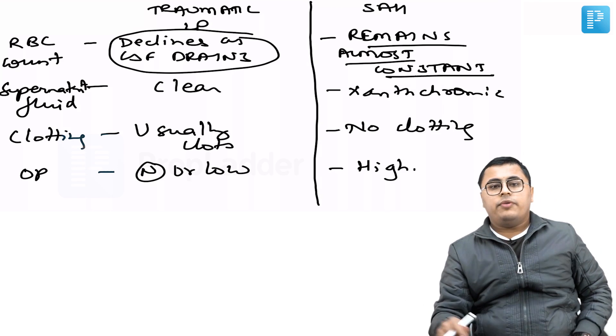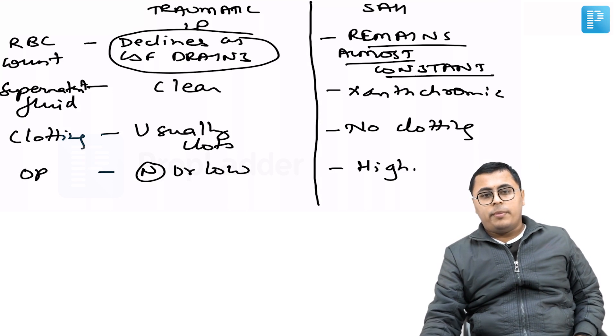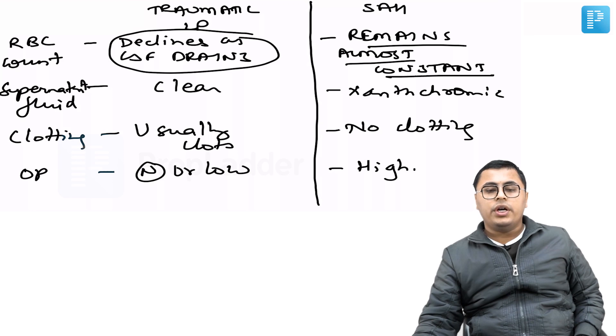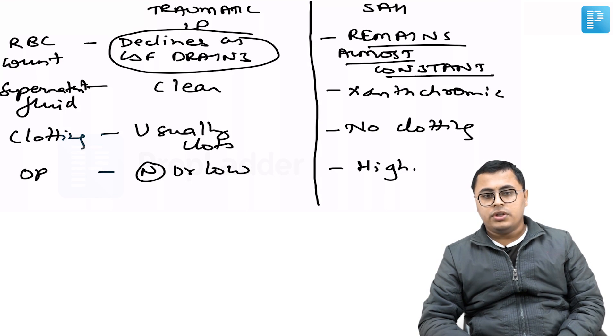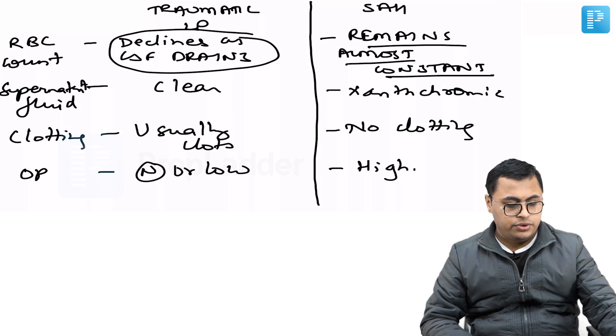These are the differentiating features between traumatic lumbar puncture and CSF in subarachnoid hemorrhage: RBC count, supernatant fluid, clotting, and opening pressure.